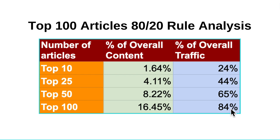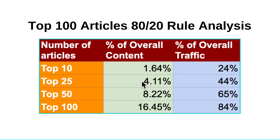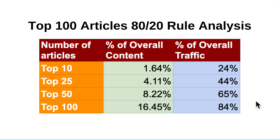For smaller sites I have, these numbers are actually bigger. But this site is a really good example for content analysis because it has 600 articles, has been around for 15 months, and has over 200,000 monthly sessions. You'll see how the top 25 is 4% of the overall content and 44% of the traffic. And jumping ahead: the top 116 articles — 16% of overall content — is 84% of the overall traffic. So basically I could get rid of 500 of my articles and still have 84% of revenue.